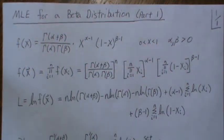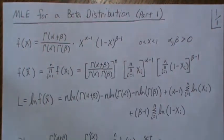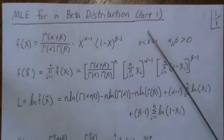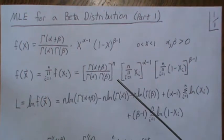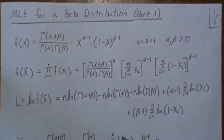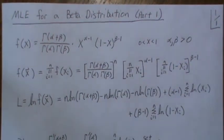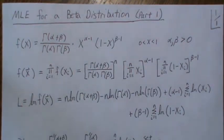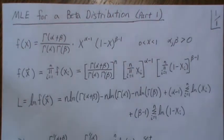In this video we derived the maximum likelihood estimators for the parameters of a beta distribution. I'm calling this part one because we're going to develop a part two where we take these equations and copy them into R and solve them using the Newton-Raphson method. We also combine the method of moments estimators in that same video, but that'll be part two.